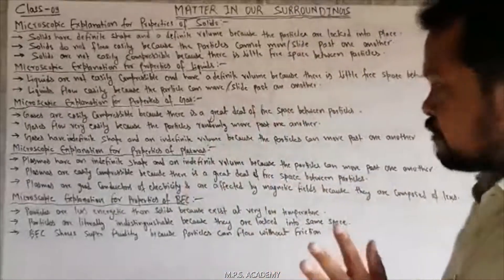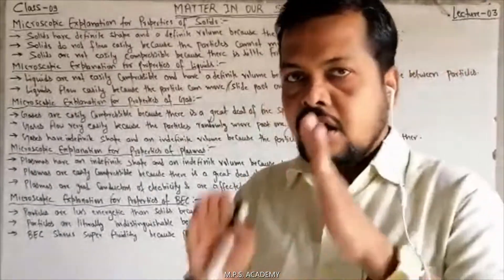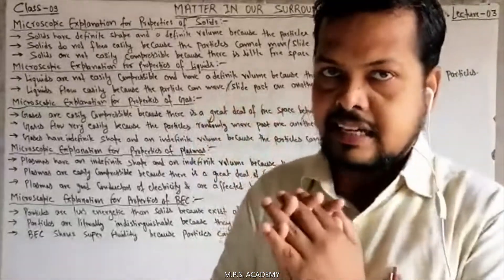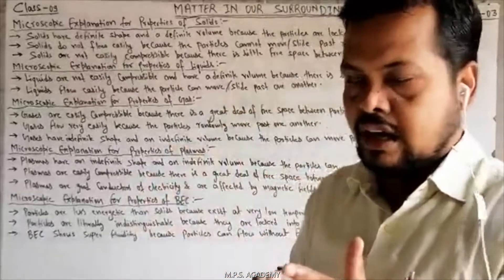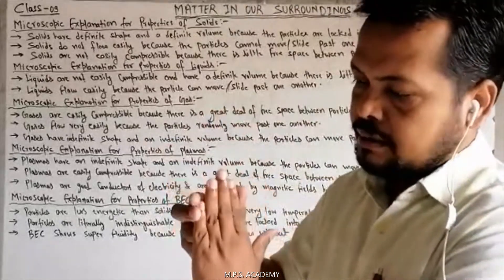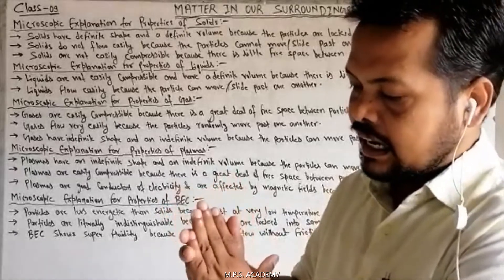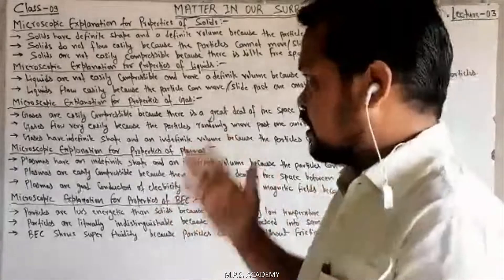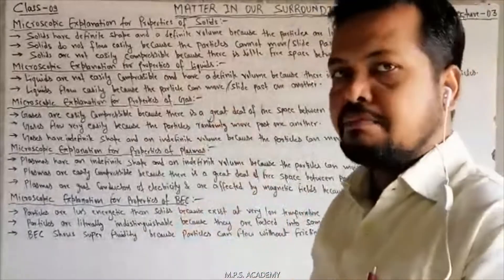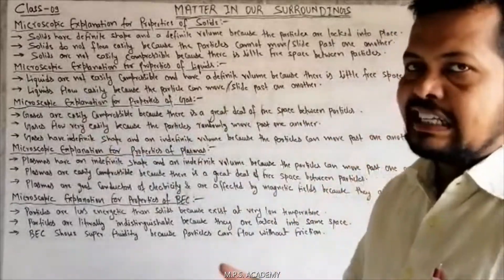Solid compress क्यों नहीं हो सकता है? Because there is little space between them. Actually में solid particles के बीच में negligible space होता है — लगभग zero के बराबर उनके बीच में space पाया जाता है। जब space नहीं होगा तो compress नहीं होगा। That means solid के particles के बीच में space नहीं होता है, इसलिए उनको हम compress नहीं कर सकते हैं।